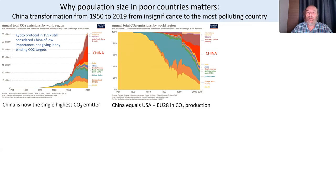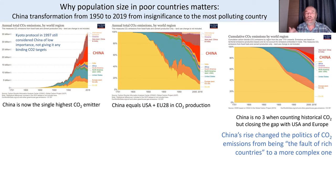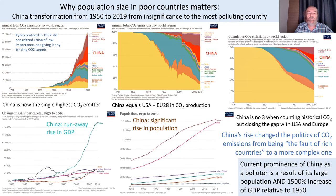China equals the USA plus 28 EU countries combined in CO2 share. Even when we look at cumulative historical emissions, China is already number three. This changed the politics of Kyoto-type agreements, because developed countries now emit a minority of total emissions. The distinction between developed and developing countries in climate policy can no longer be politically maintained.